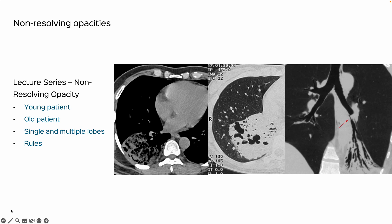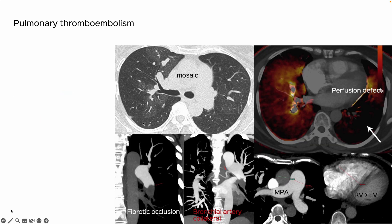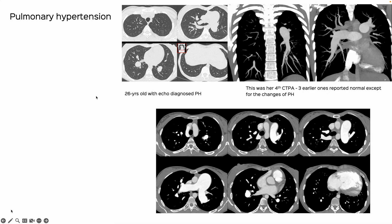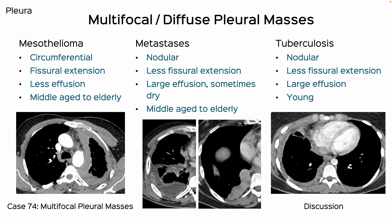Then we look at non-resolving opacities and how to approach them, followed by lung cancer staging — I'll cover the ninth edition, specifically what we need to be doing without going into excessive detail. We'll then spend two weeks on pulmonary thromboembolism, followed by an approach to pulmonary hypertension, and then mediastinum and pleura. After that, we do revision and a quiz.